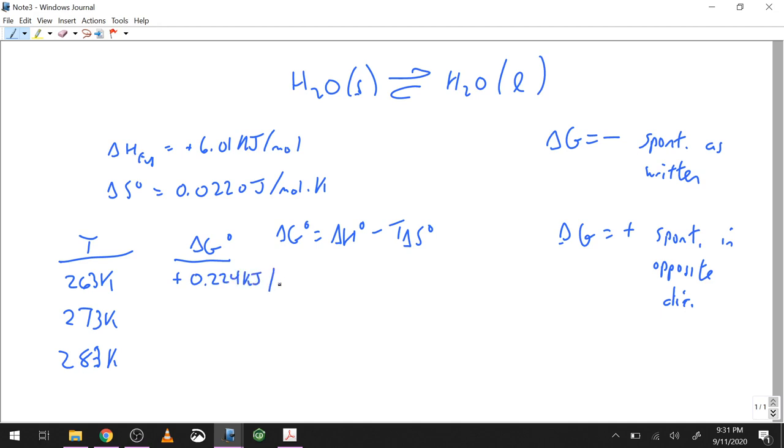At 263, delta G is positive, positive 0.224 kilojoules per mole. At 273, give or take a decimal place, this is zero. At 283, we're looking at minus 0.216 kilojoules per mole. These are tiny energy changes, but remember we're not looking at drastic changes in conditions here either. These are relatively close to the freezing point.